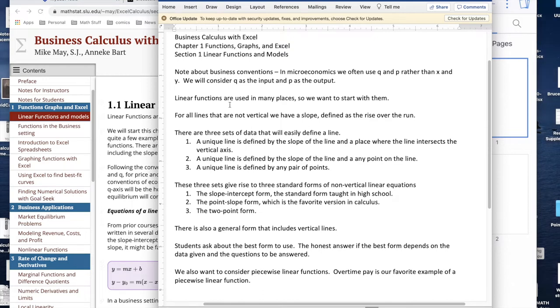Linear functions show up in many places. Most nice functions, if you zoom in far enough, they look like a line, so linear functions are a good place to start looking at functions. For all lines that aren't vertical we have a slope. The slope is defined as the rise over the run.